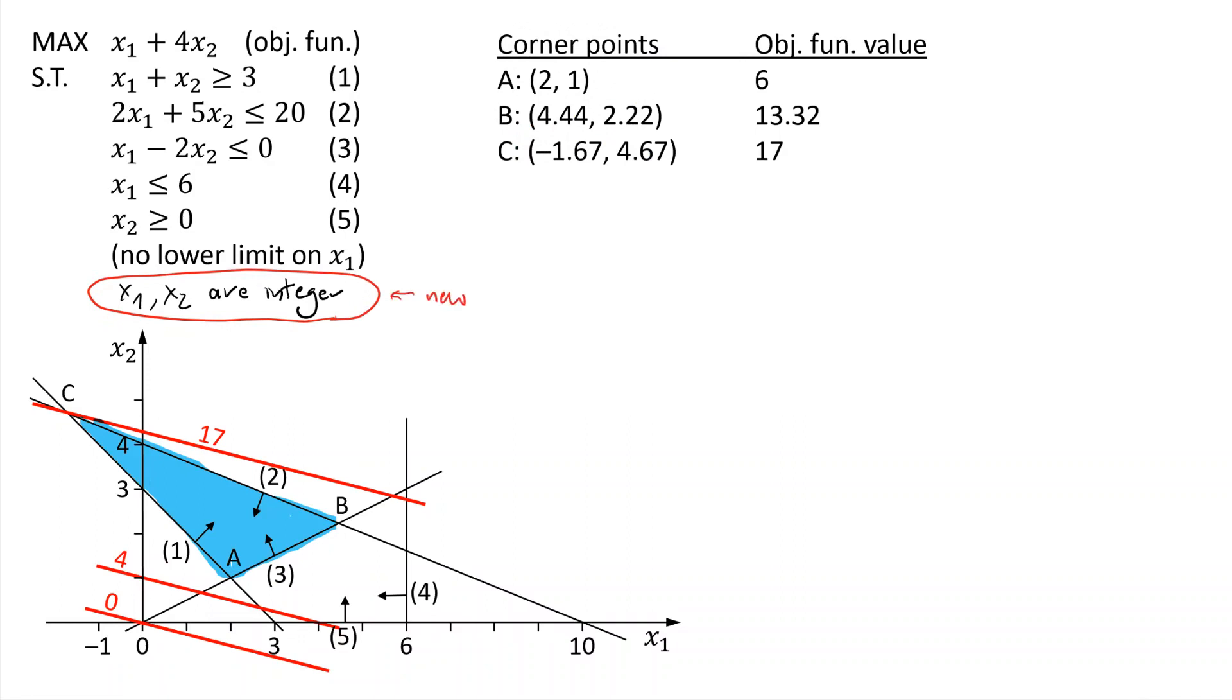So right before those modifications, the blue region was the feasible region. But now we're adding this integer constraint. What changes? First of all, what you have to recognize is that we no longer have fractional feasible solutions. Point A is actually (2, 1). It is an integer point, so it satisfies this new constraint. However, there are other points here, like B and C, which are actually not integer. So they are no longer feasible.